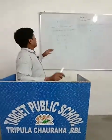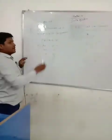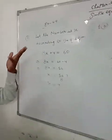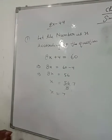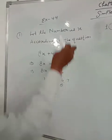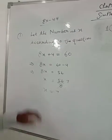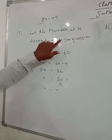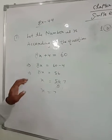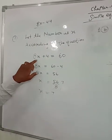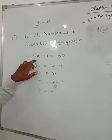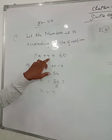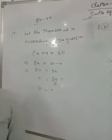Let the number be x. According to the question, what is eight times the number? We know eight times the number, we add four, and the result is sixty.